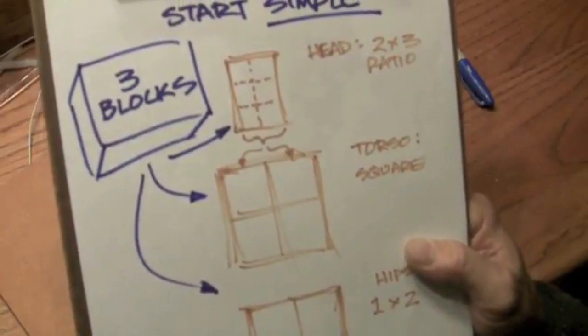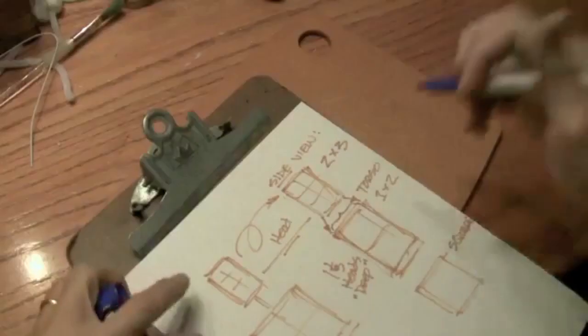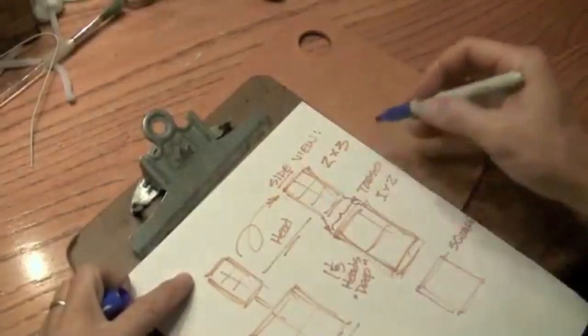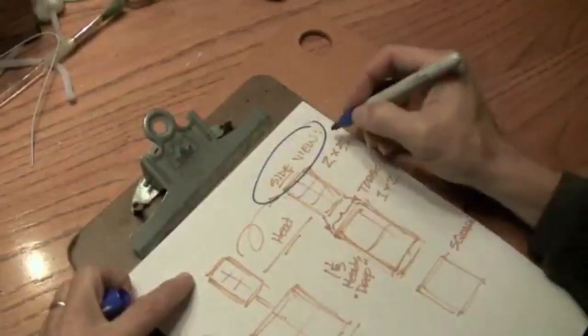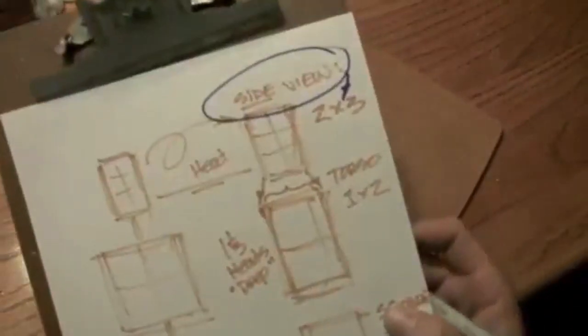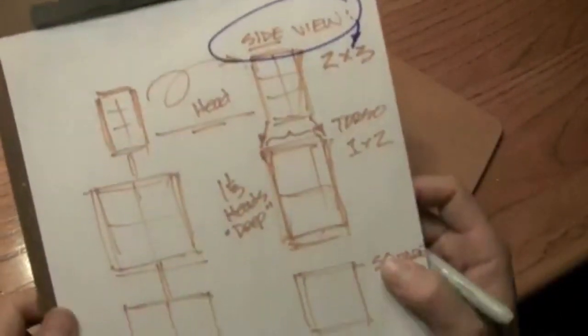Now if we take each of these cubes and turn them, view them from the side. Side view: now the head is still surprisingly roughly a two by three rectangle, but the torso is a one by two rectangle and the hips are now square.